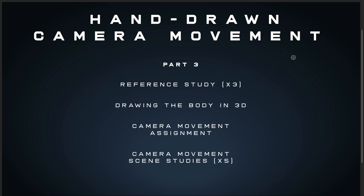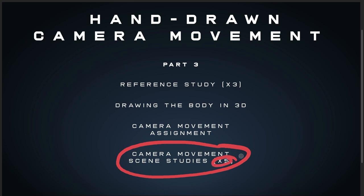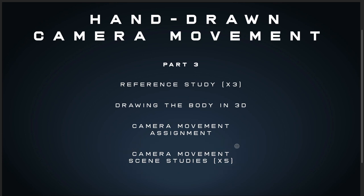Part three is all about studies. We're looking at Drawing the Body in 3D — studying the body from obscure angles and how to approach them with foreshortening. There's a camera movement assignment so you'll get a chance to do it yourself, and five camera movement scene studies from live-action films, breaking down how the camera is used creatively to tell the story — because we're not just moving the camera for the sake of it; it has to serve the narrative.